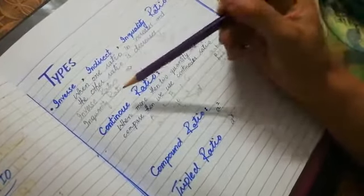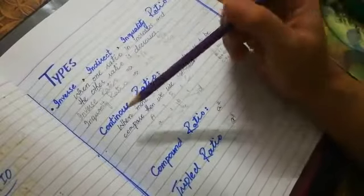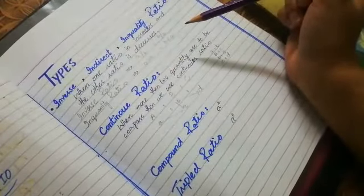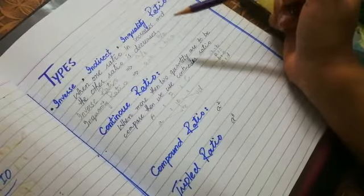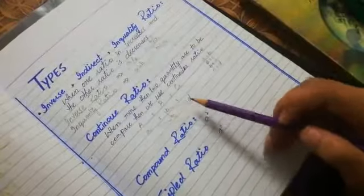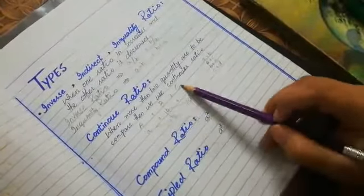Secondly, continuous ratio. When more than two quantities are to be compared then we use continuous ratio. When we use continuous ratio, we compare more than two quantities. Like here we have four quantities a, b, c, d. Now we have to solve according to this formula: a ratio b ratio c.